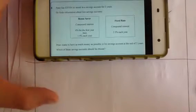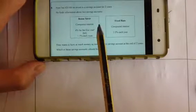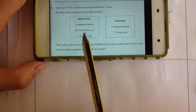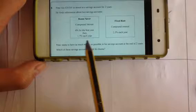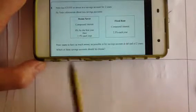Peter has £20,000 to invest in a savings account for 2 years. He finds information about 2 savings accounts. He's got Bonus Saver, which is 4% for the first year, then 1.5% each year after, and Fixed Rate, which is just 2.5% each year.